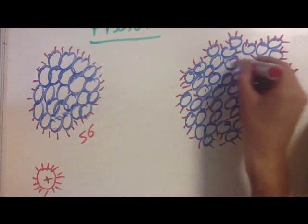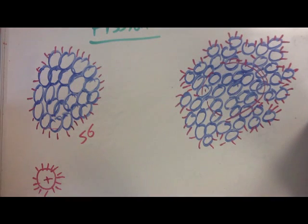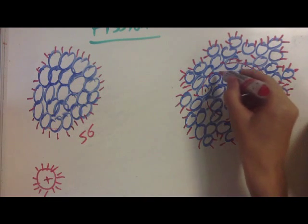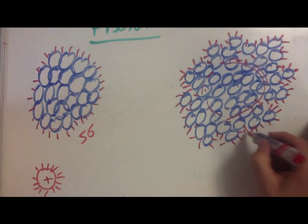If the strong force can only operate over this dotted circle in the middle, then these ones on the outside are no longer stuck in a great pure spherical shape. They're able to push themselves around and get all over the place, and gaps suddenly appear, which means surface area starts to rocket up.